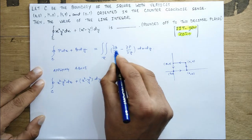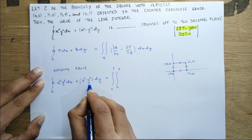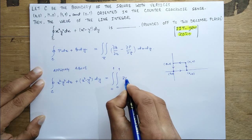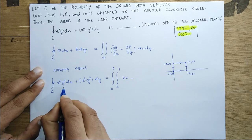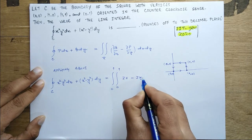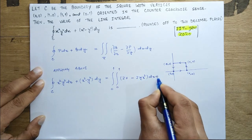Then you have to take the derivative of q, which is this, with respect to x. Now differentiation of x² - y² with respect to x is 2x only, minus the differentiation of p with respect to y, which is 2y x², and then you have dx dy.